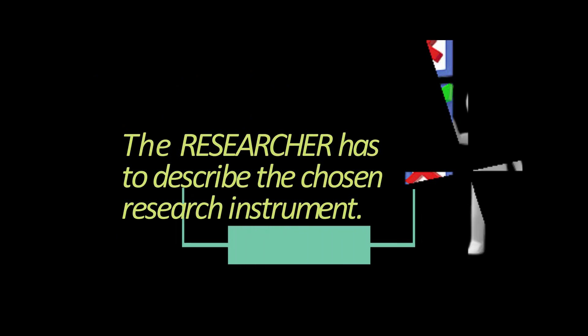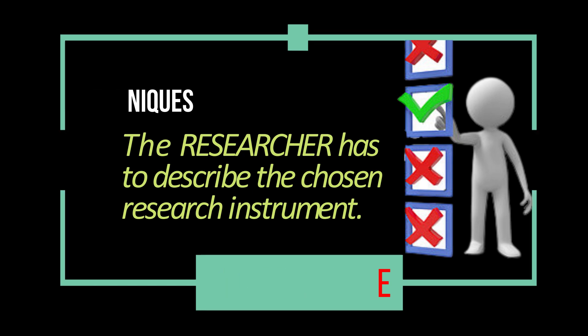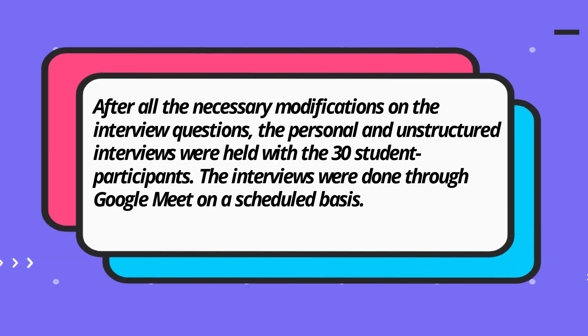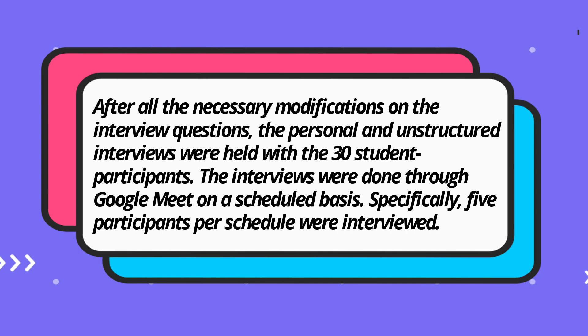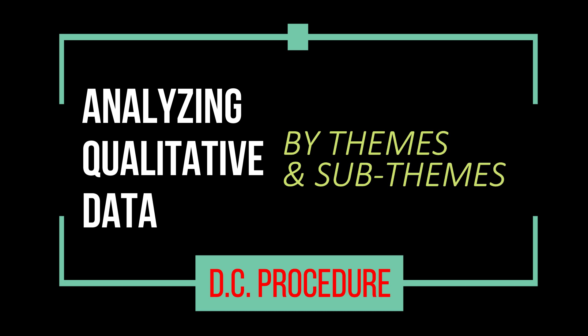In this part, the researcher has to describe the process of using the chosen research instruments employed in collecting data. Look at this example — that is a sample first paragraph for this part of Chapter 3. After this paragraph, the researcher has to explain how the data collected will be analyzed in accordance with the selected research design. For qualitative, the most common way of analyzing data is by categorizing them into themes and sub-themes.